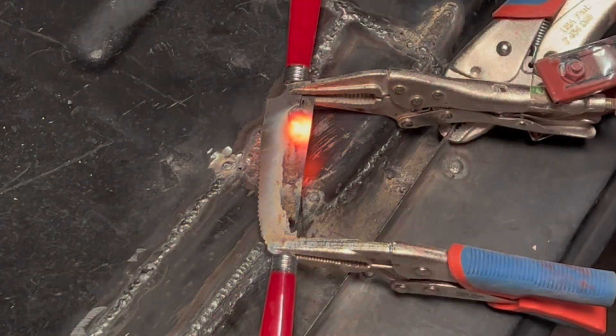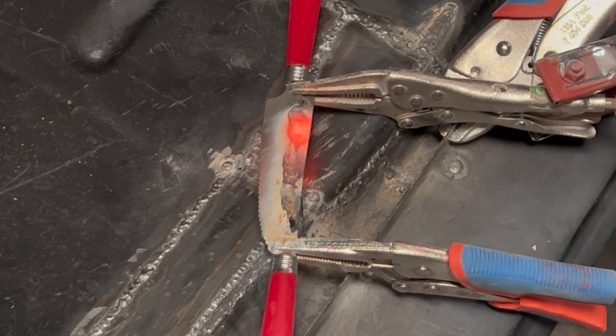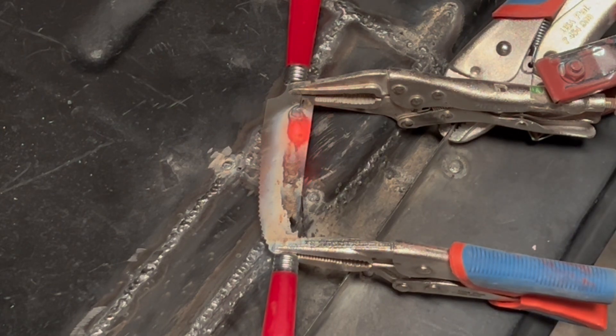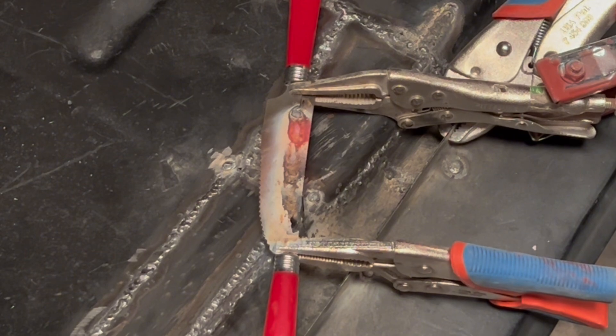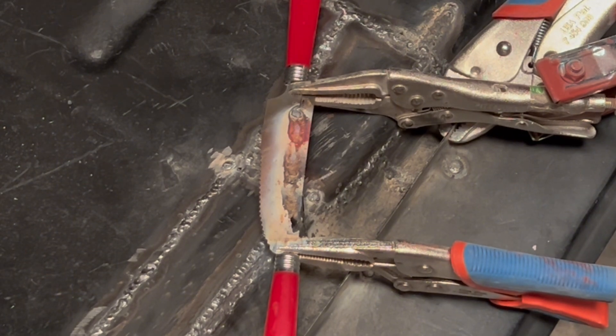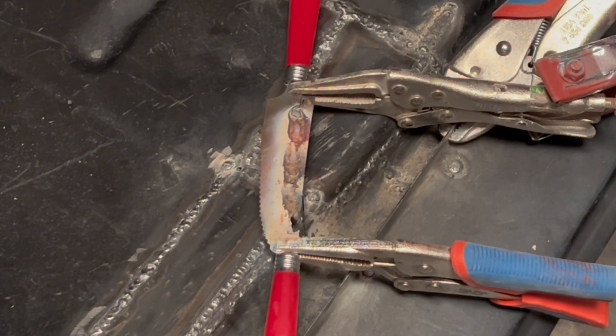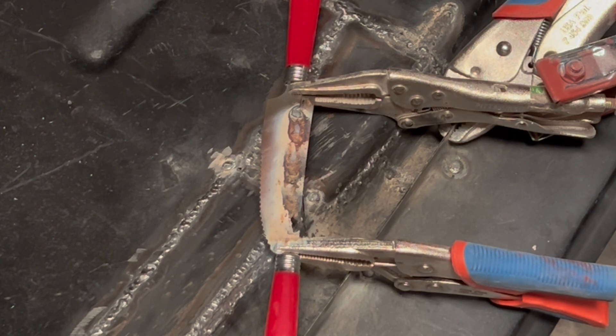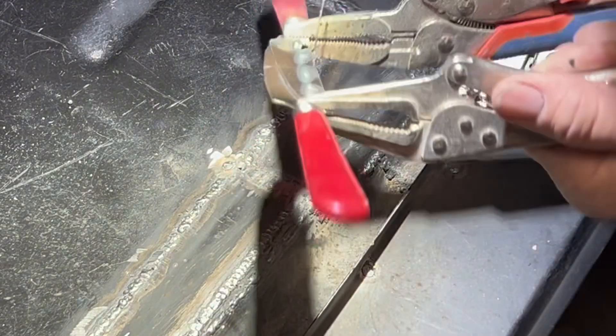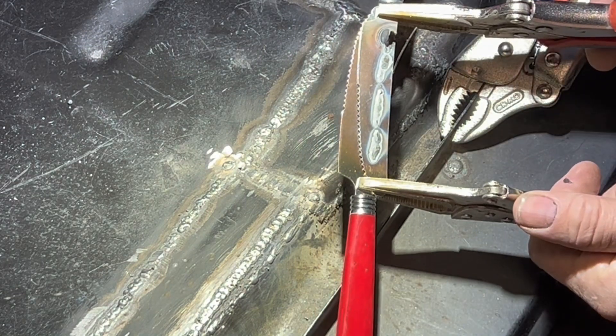But there you go. I can run a bead on less than 18 gauge steel with a flux core welder. I just don't run a bead because I don't want to warp the crap out of the metal. You see how long it takes to cool off. You can also see that I have 100% penetration.